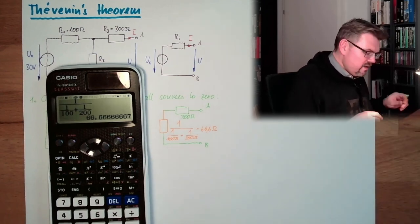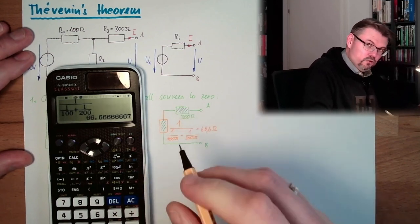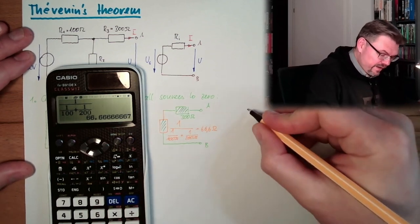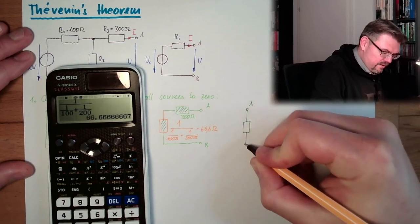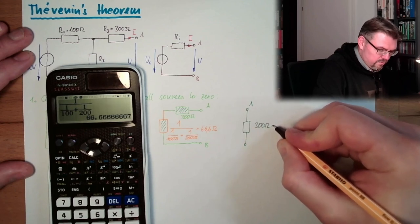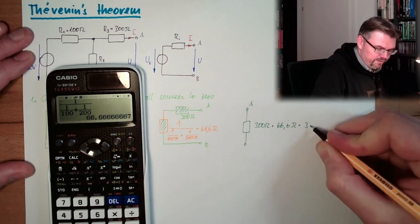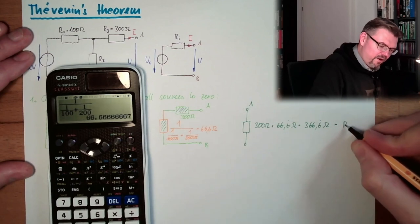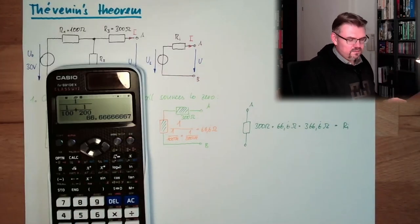Those two are in parallel, and that combination is in series with R3. So we have A and B, and the total resistance is 300 ohms plus 66.6̄ ohms = 366.6̄ ohms. And this is already Ri.